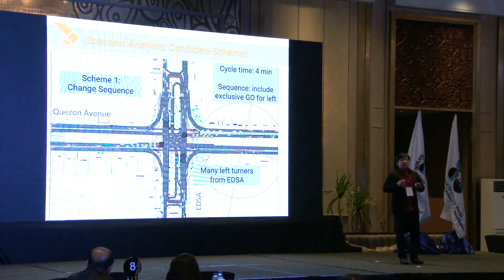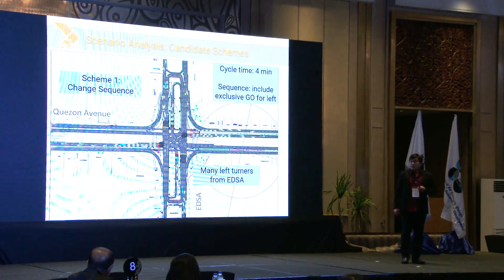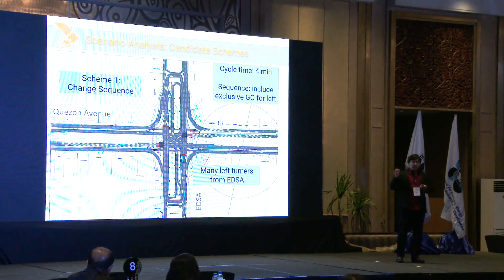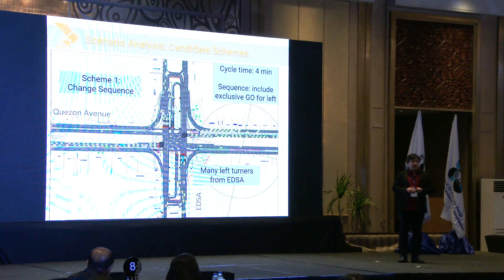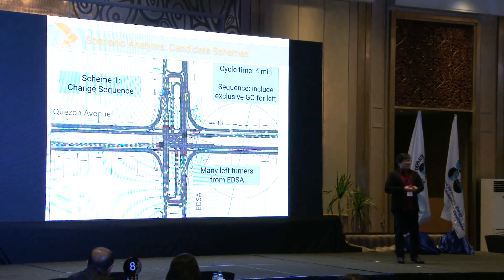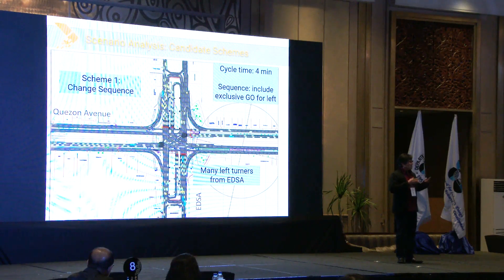We want to improve the situation and propose an alternative solution. One thing we can do is to change the sequence of the go indication. It is observed that there are many left turners from ETSA, so we include in the sequence an exclusive go signal for the left turners. However, after the simulation experiment, we can see that there seems to be no significant improvement in traffic flow. We still see long queues of waiting vehicles.